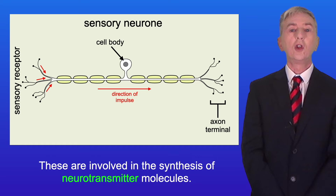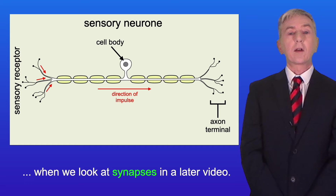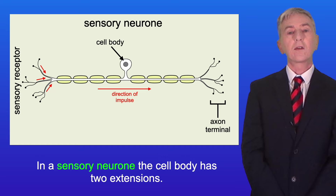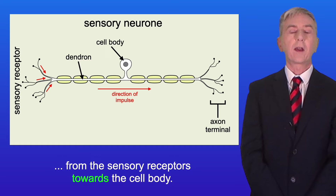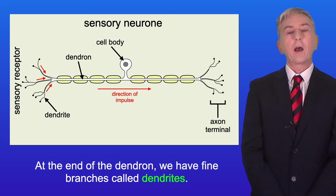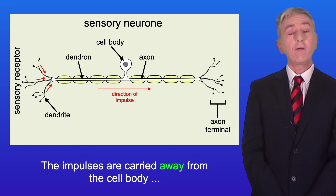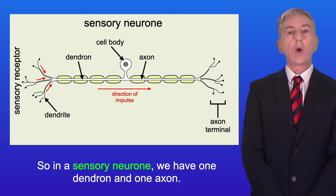We look at the role of neurotransmitters when we look at synapses in a later video. In a sensory neuron the cell body has two extensions. The dendron carries impulses from the sensory receptors towards the cell body. At the end of the dendron we have fine branches called dendrites. The impulses are carried away from the cell body via the axon. So in a sensory neuron we have one dendron and one axon.